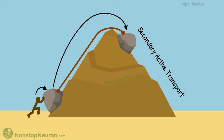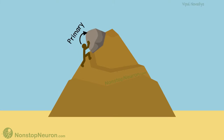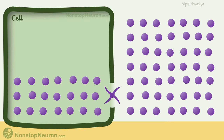This is the basic difference between primary and secondary active transport. When the ultimate source of energy is directly moving the object, it's primary active transport. This transport gives potential energy to the object that has been moved. When that energy is secondarily used to move other objects, it's called secondary active transport. Now let's understand primary and secondary active transport across the cell membrane.